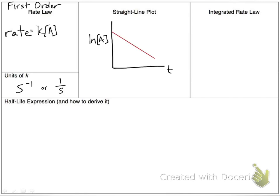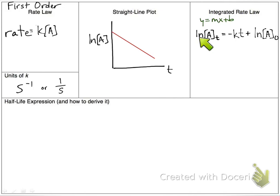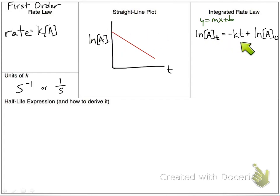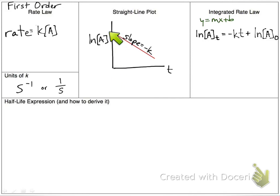Our straight-line plot: the natural log of concentration versus time is linear. Following y equals mx plus b, for y we write natural log of concentration of A at any given time — that's our vertical axis — equals negative kt (negative k is our slope), plus natural log of the initial concentration as our y-intercept, since at time zero that's whatever the natural log of the initial concentration is.